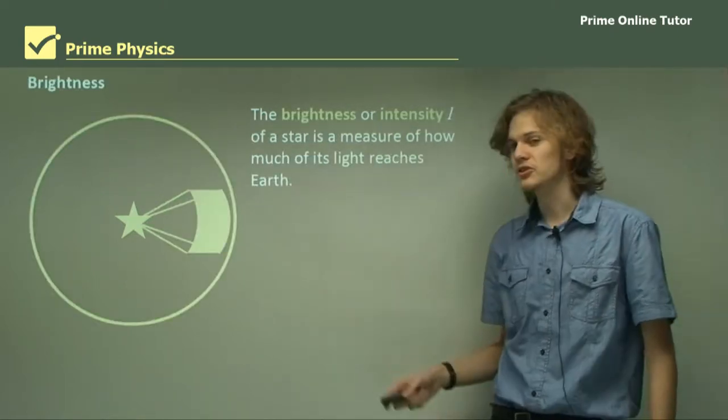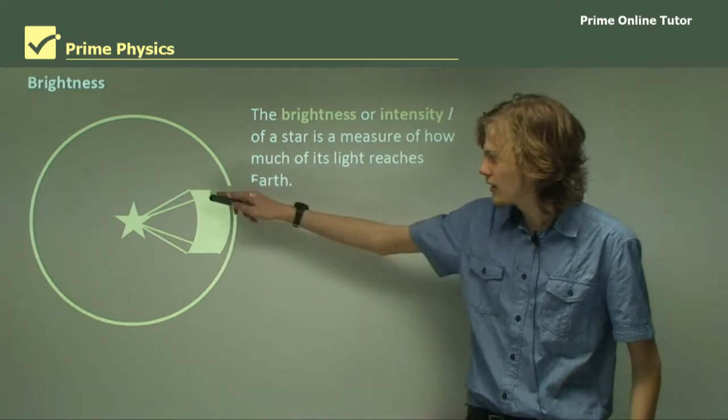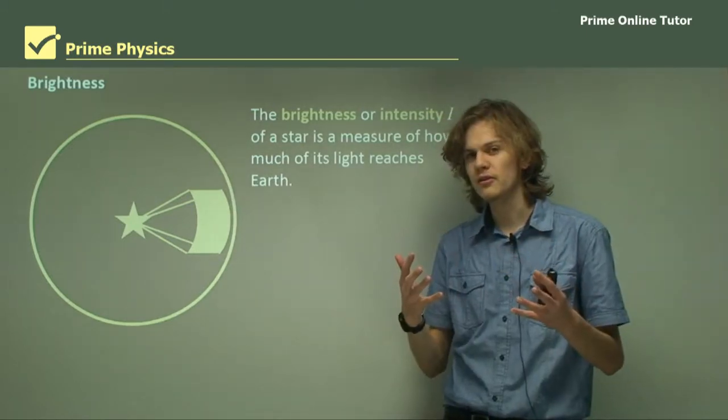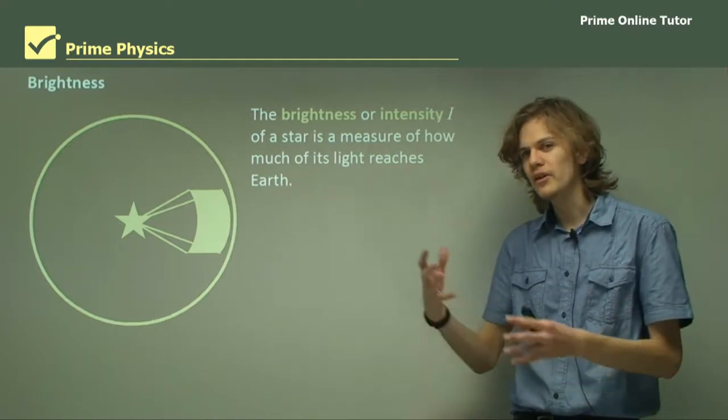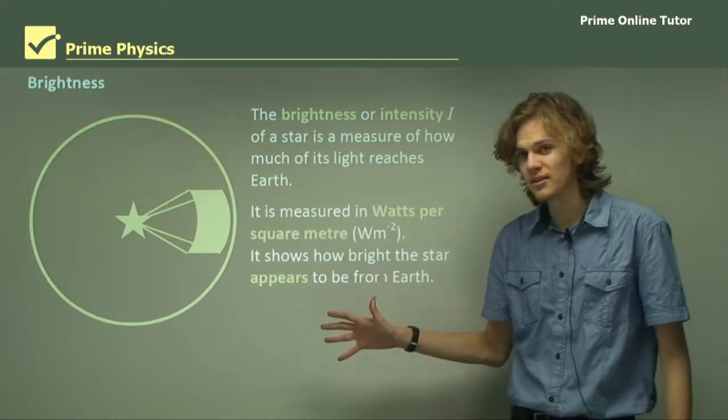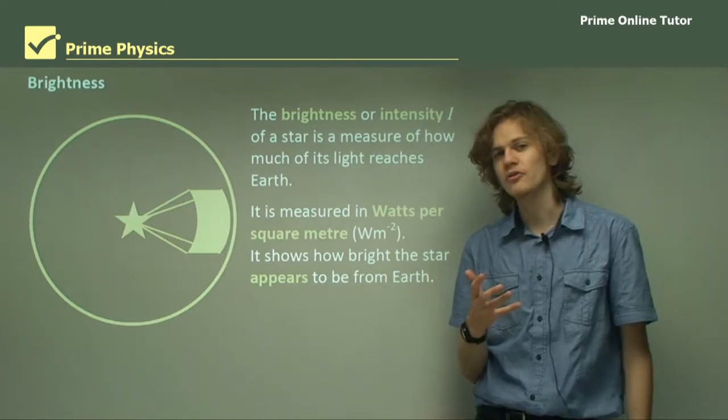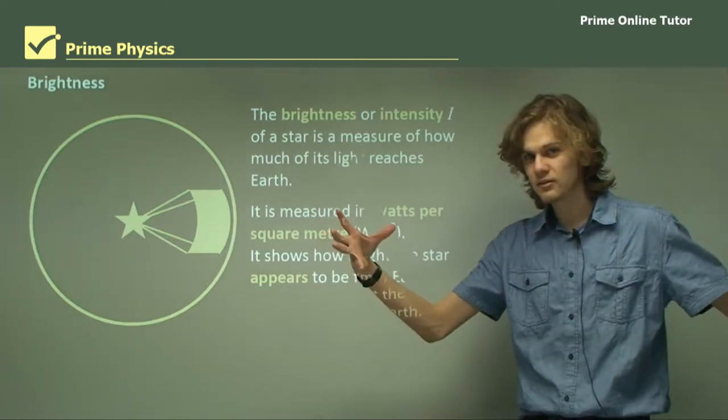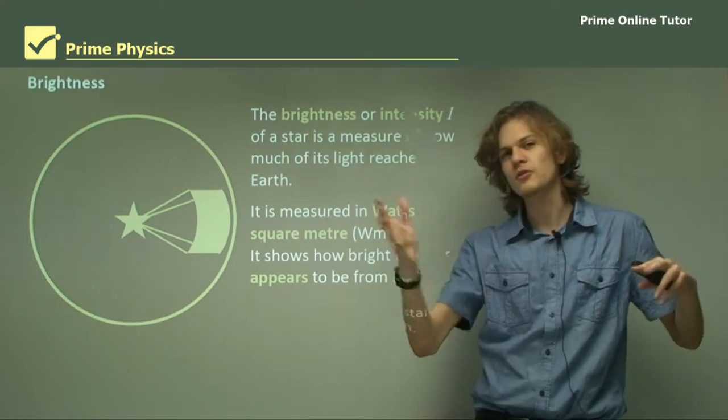The brightness or intensity of a star, represented by capital I, is a measure of how much of its light reaches Earth. When we get further from the star, the same rectangle gets bigger, so the amount of light in each rectangle of the same size gets smaller and the star gets dimmer. It's measured in watts per square meter, showing how bright the star appears from Earth.